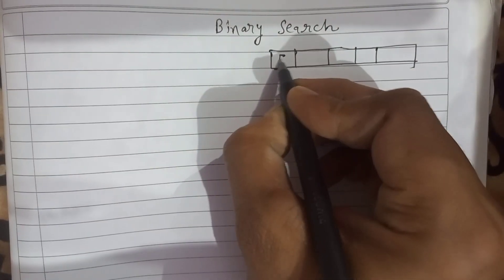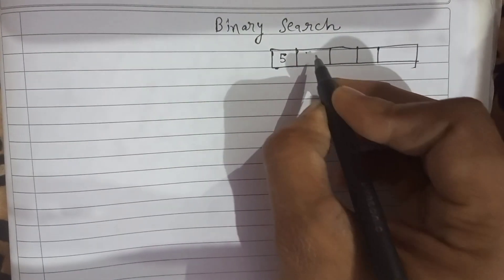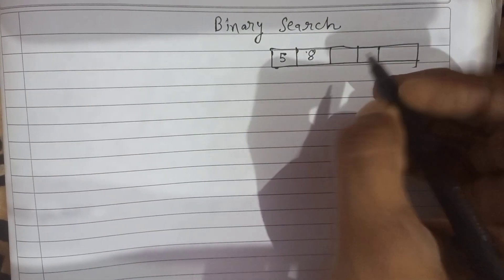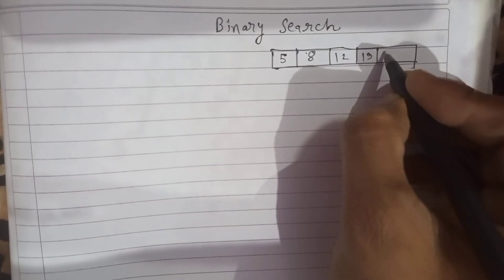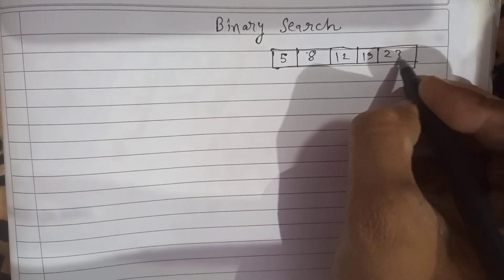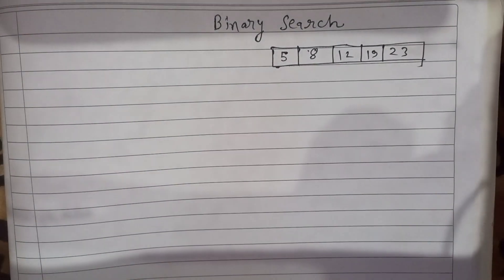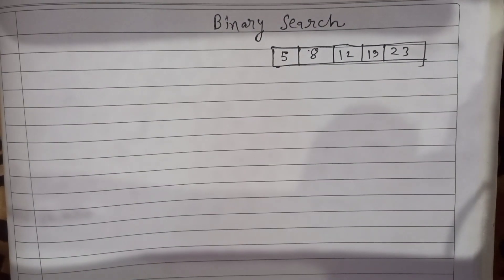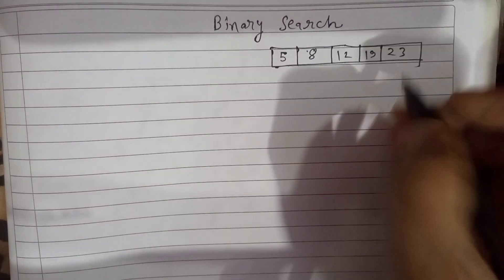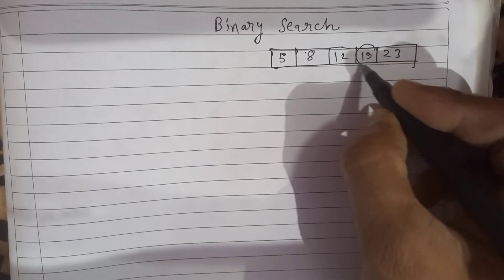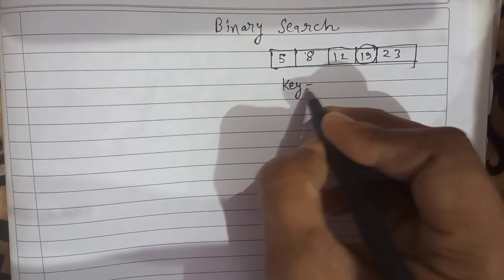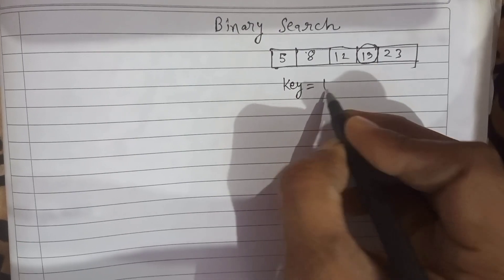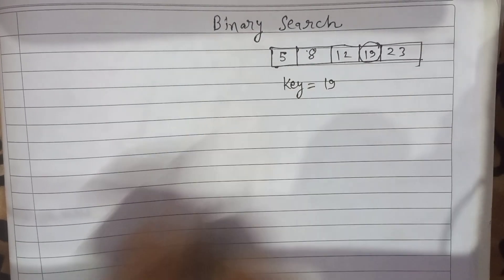Let's say we have created an array with 5 elements filled in it, and this array is in sorted form, in ascending order. Suppose we need to search for 19 — this will be our key value, that is 19.